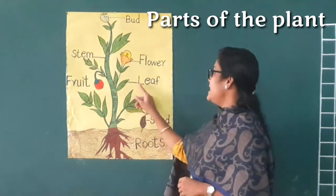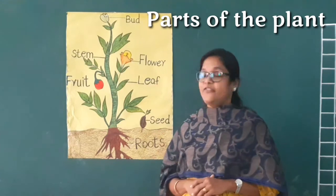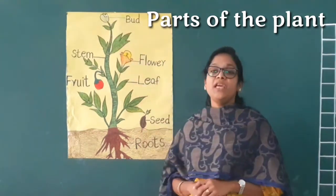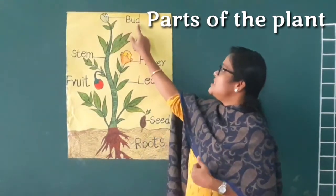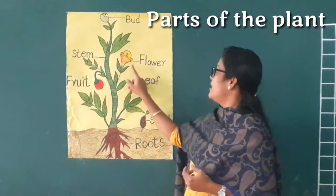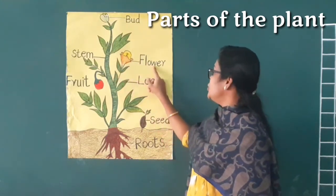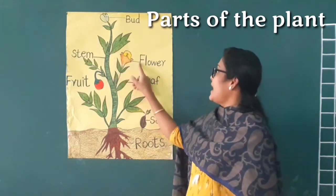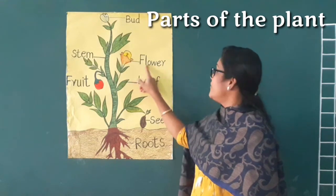Leaf — L-E-A-F, leaf. Flower — F-L-O-W-E-R, flower. F-L-O-W-E-R, flower.